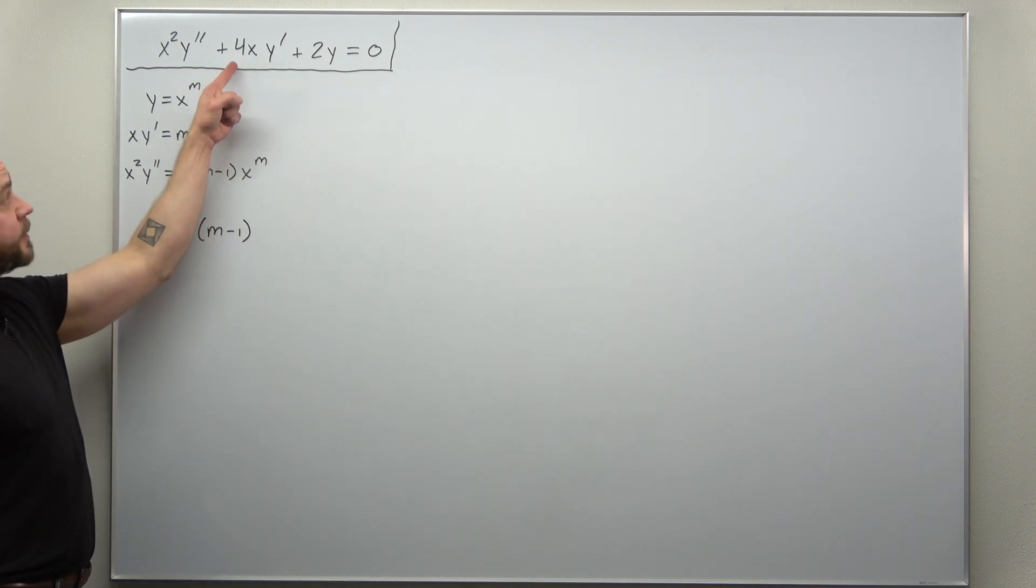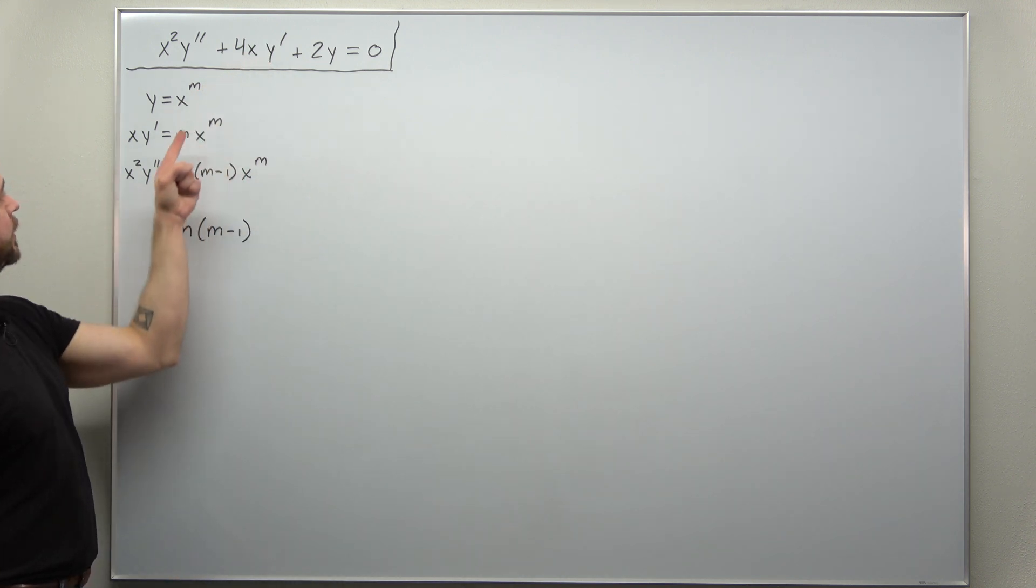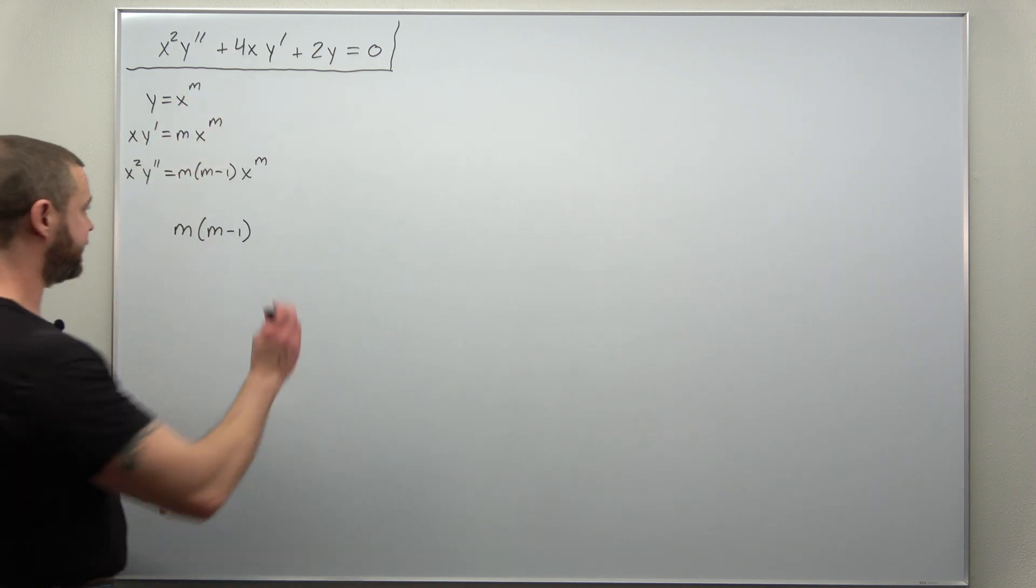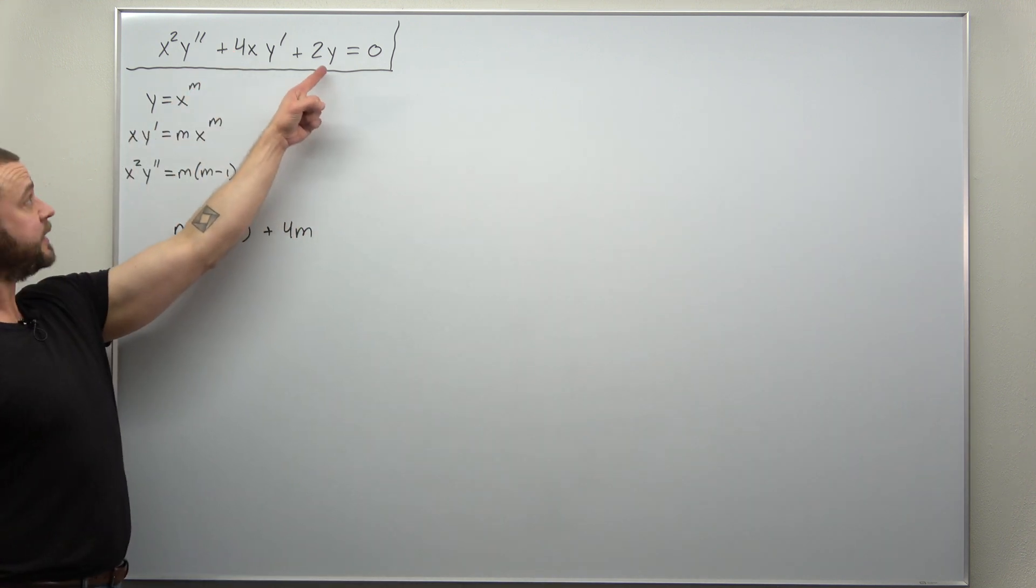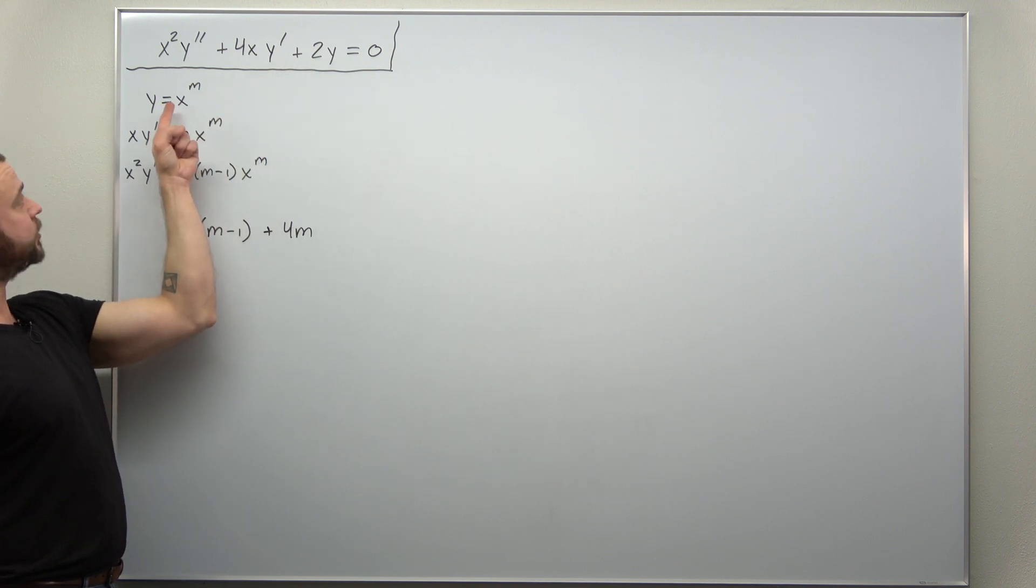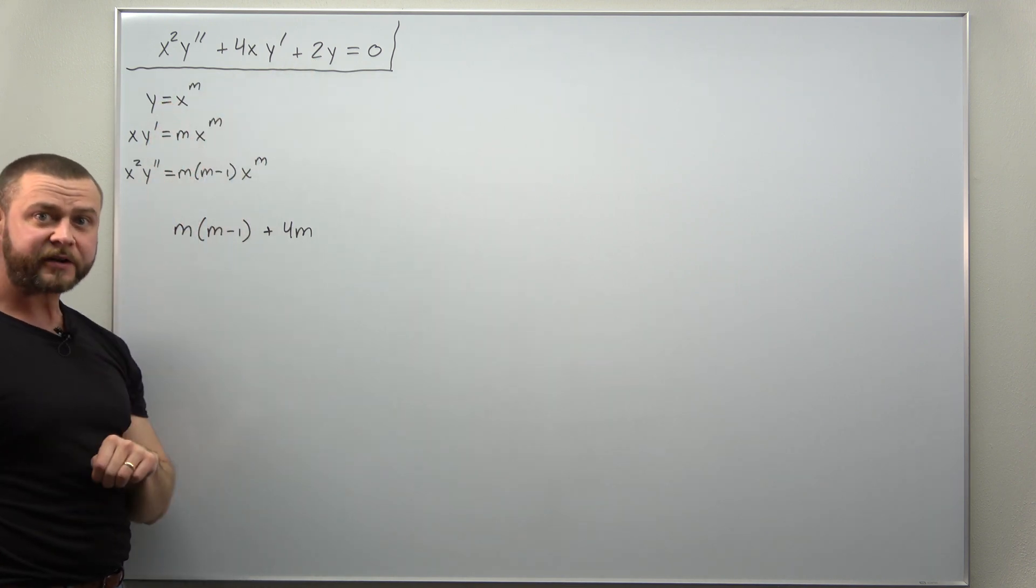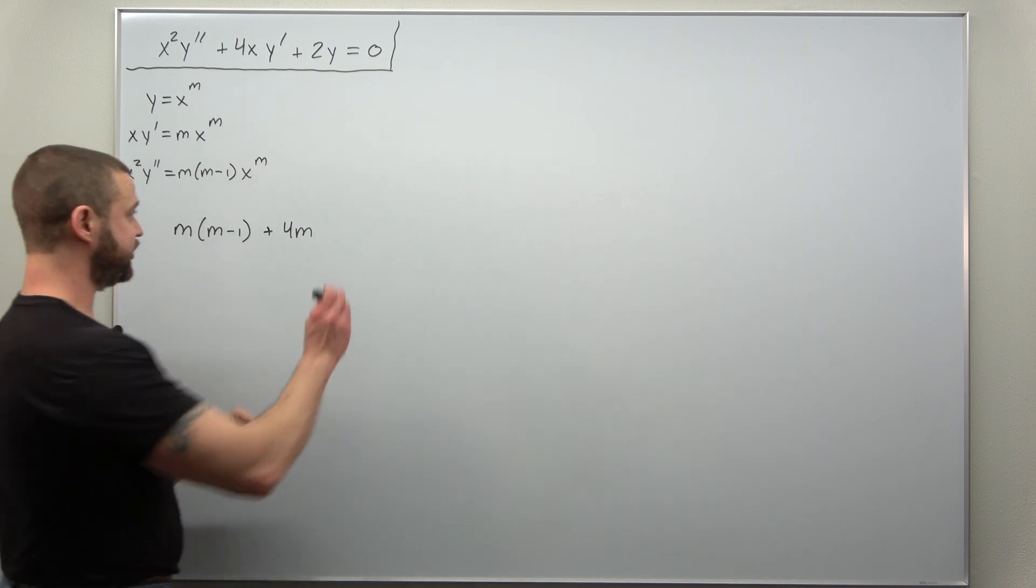Our next term here, the xy prime, that's m but we're multiplying by 4, and then our y term we multiply that by 2. We factored x to the m out, so we're just left with plus 2.